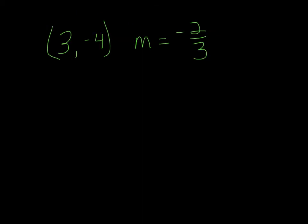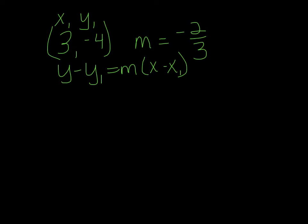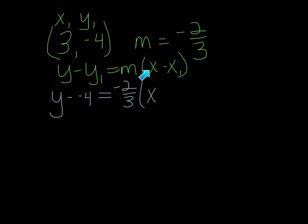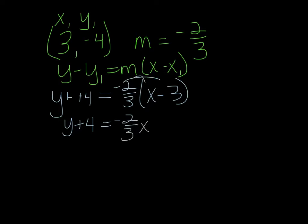Let's do another one. We have y minus y sub 1 equals m times x minus x sub 1. Substitution problem — I'm going to label x1, y1, and m. The first y stays. y sub 1 is negative 4. My slope is negative 2 thirds. That x stays — there's no subscript. x sub 1 is 3. Now I have to distribute first. So we have y plus 4 equals negative 2 thirds x, and then negative 2 thirds times a negative 3 — those cancel — and I'm left with positive 2.